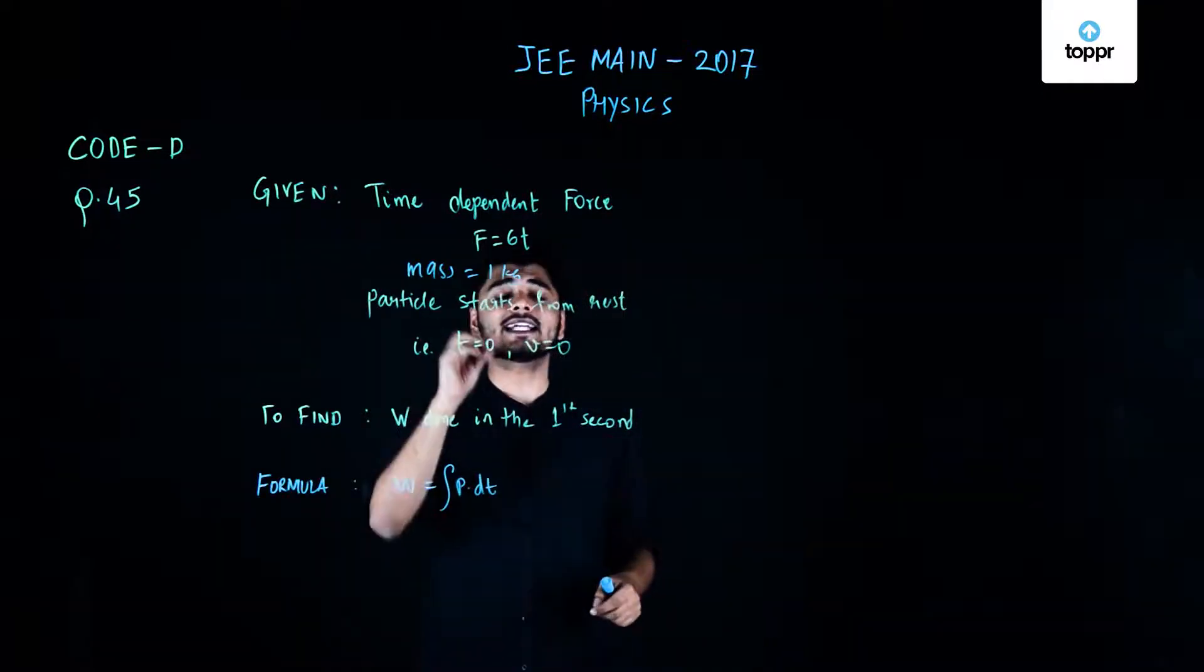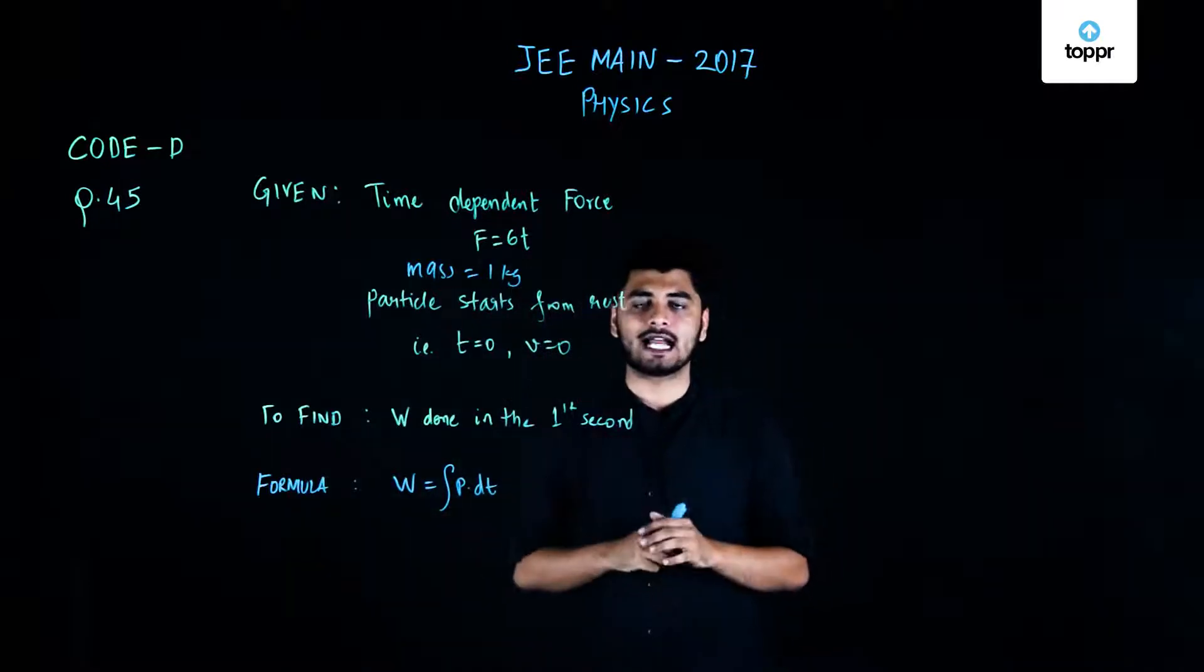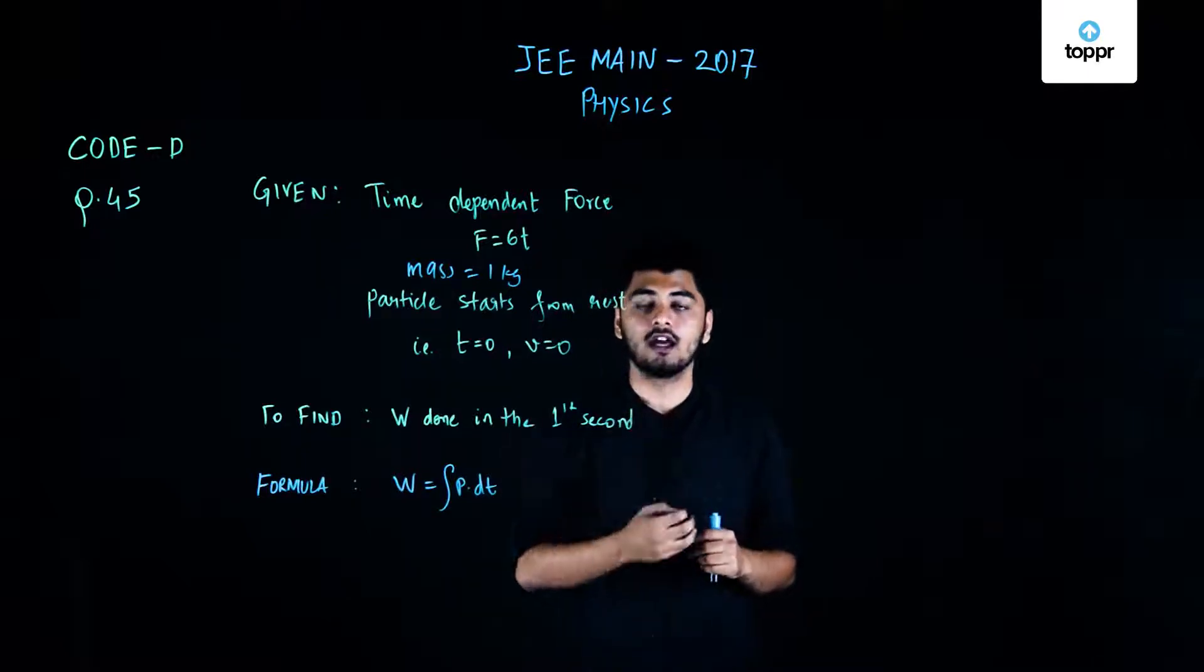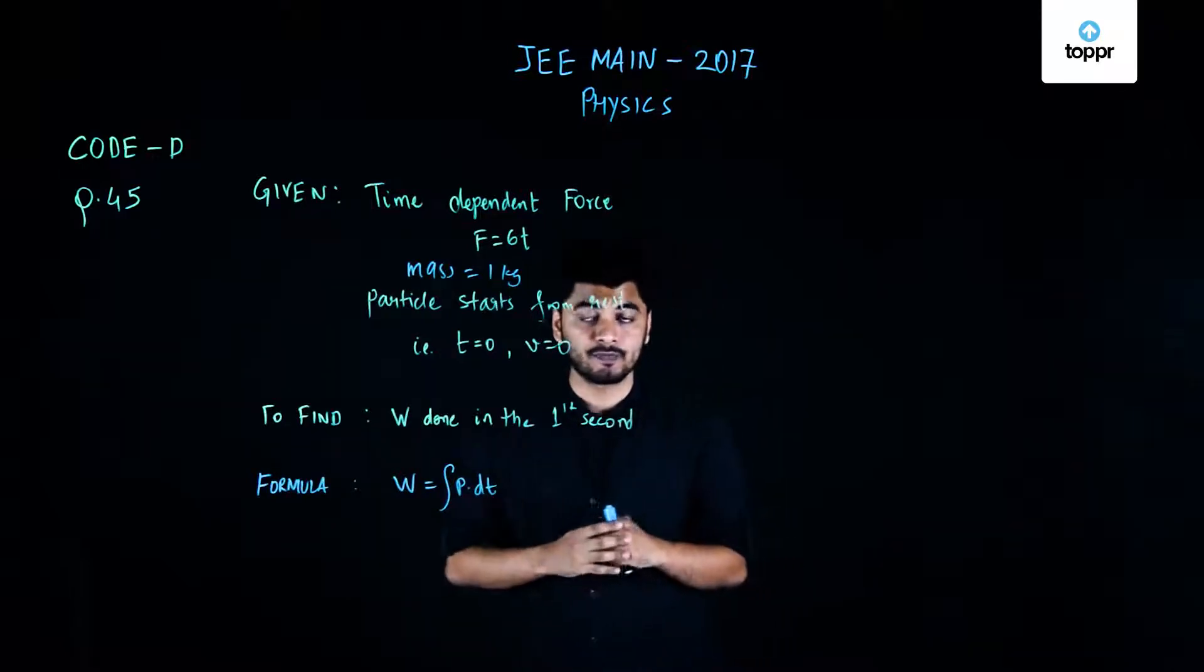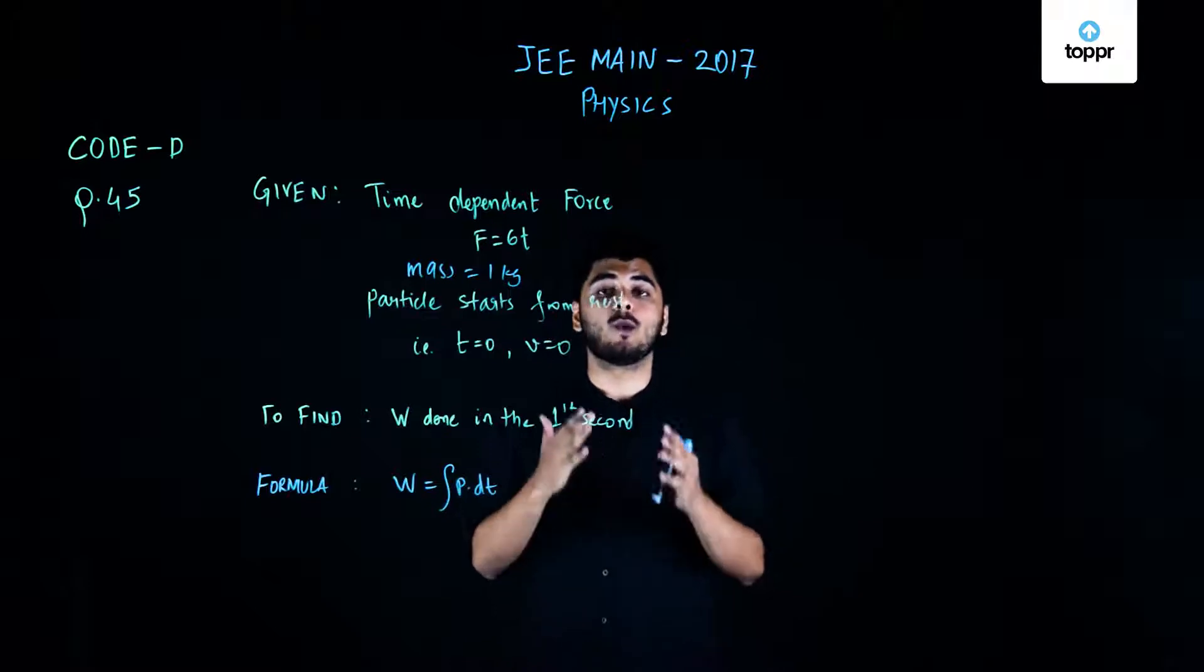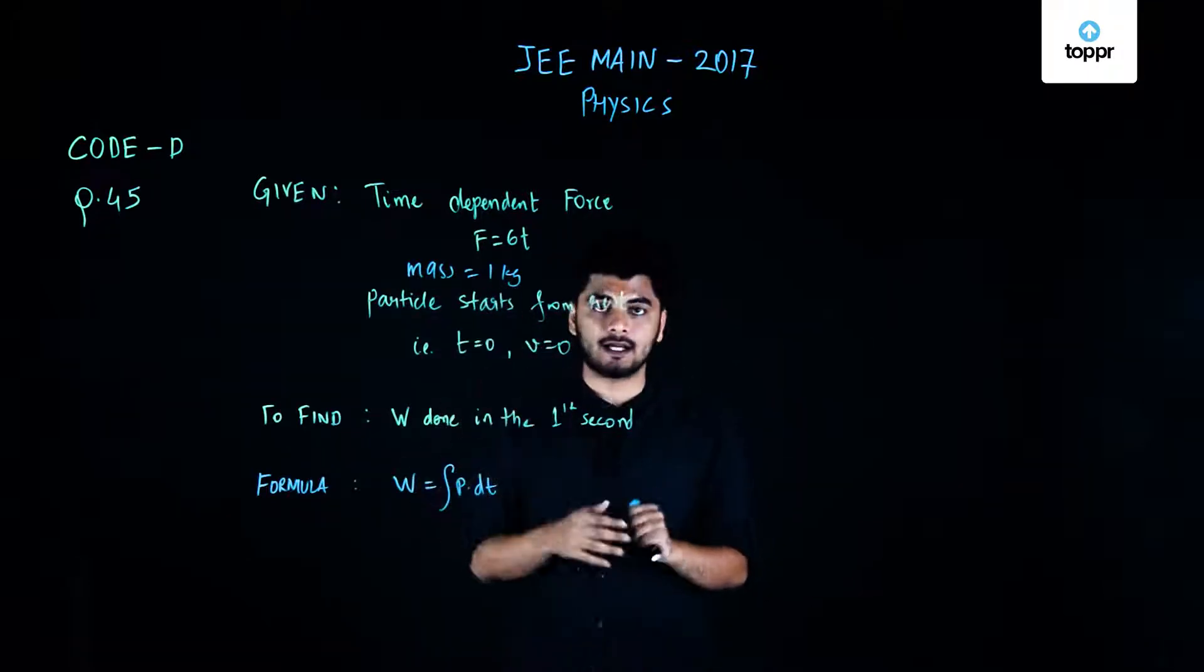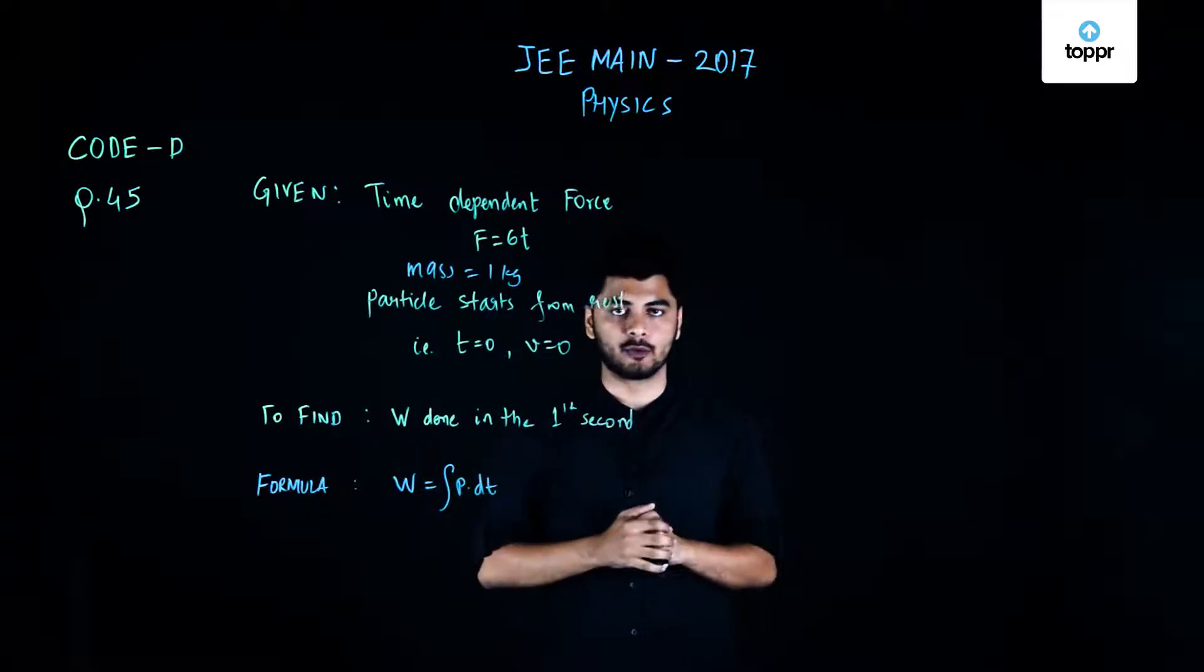Now my particle starts at rest from time t equals 0. That implies that at t equals 0, the velocity of my particle was nothing but equals to 0. Now we have been asked to find out what is the work done by this time dependent force on this particle in the very first second of the motion.